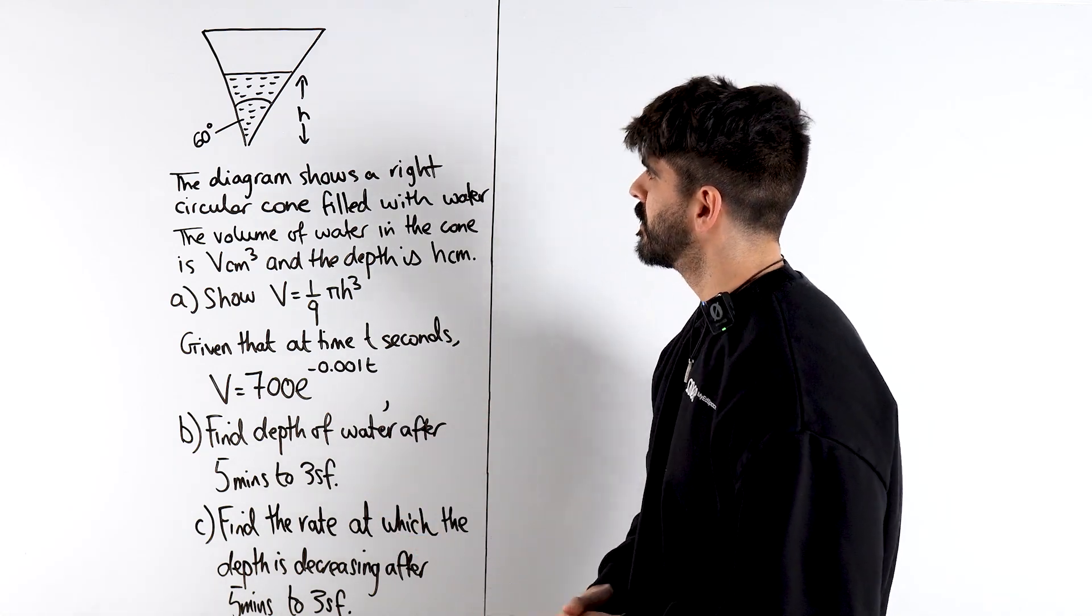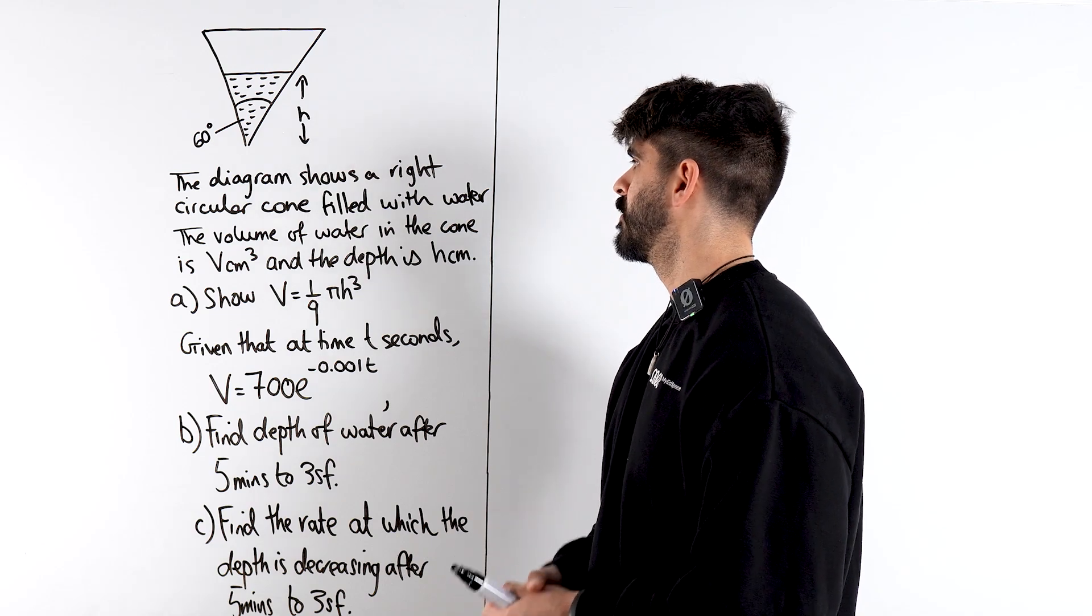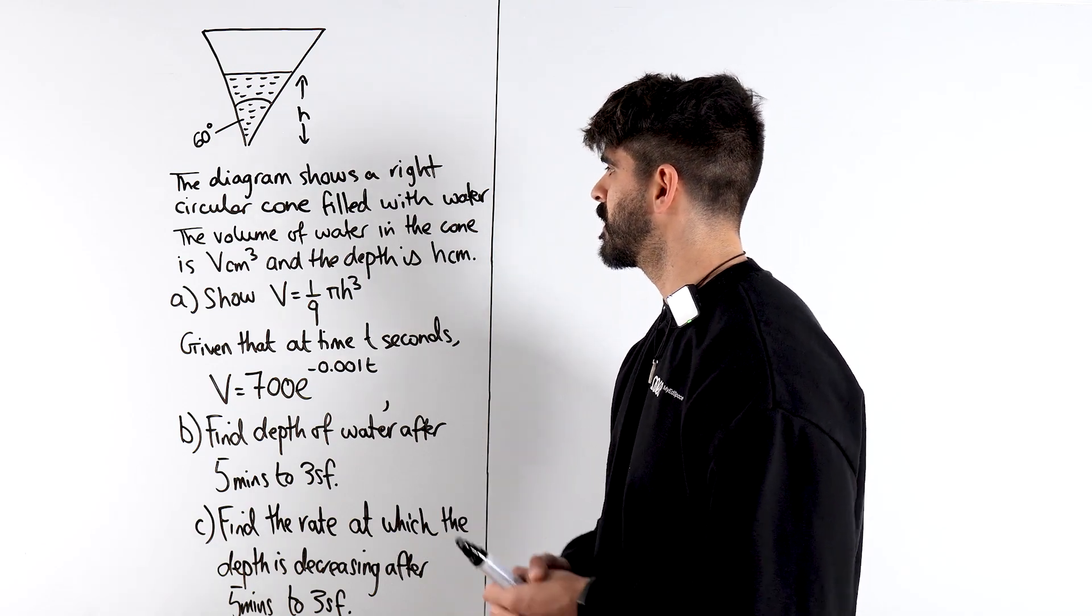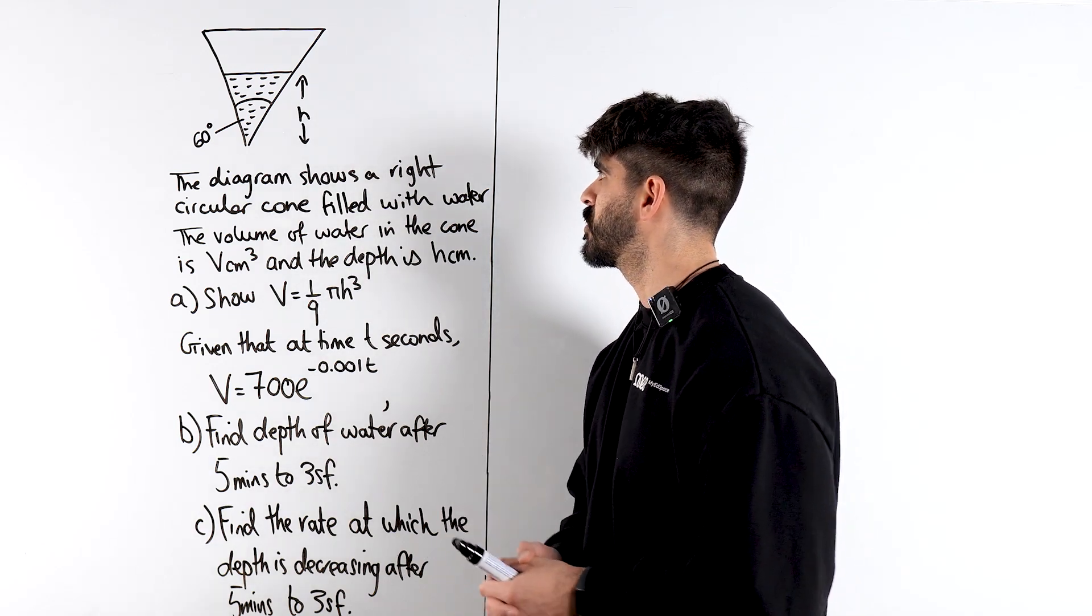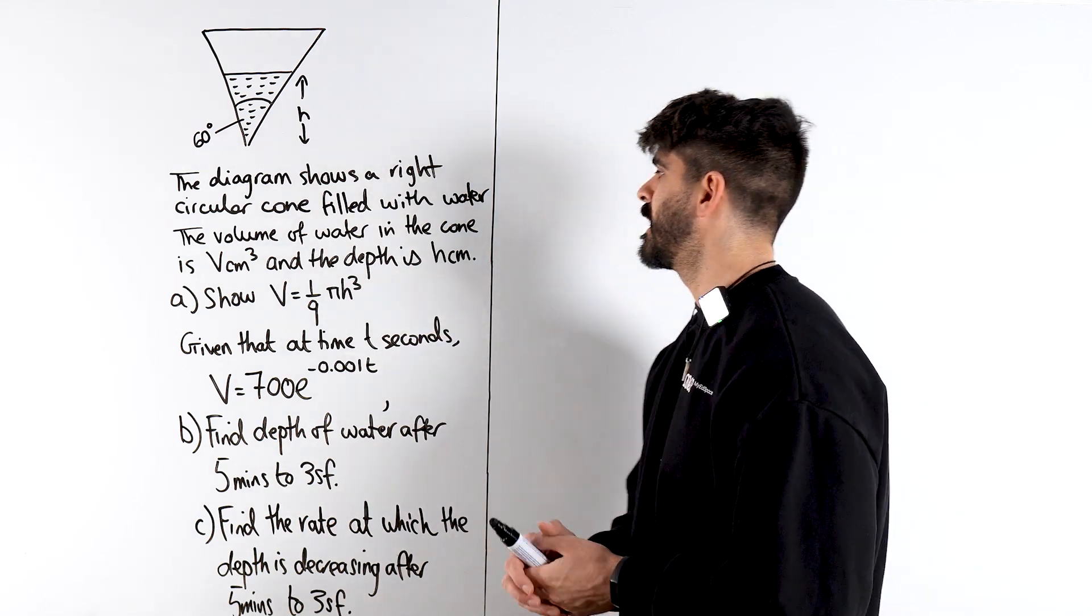but it's trying to address a nice exam question. It says, the diagram shows a right circular cone filled with water. The volume of water in the cone is V centimeter cubed and the depth is h centimeters.